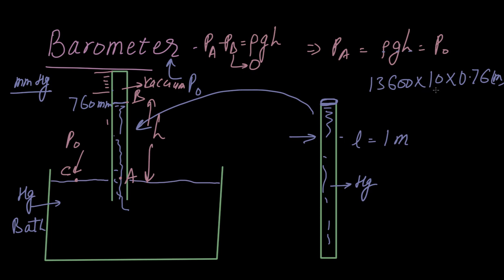So 760 mmHg will be approximately equal to 0.76 meters. This is in meters, this is in meter per second squared, and this is in kg per meter cube. If we do all of this, we'll get approximately 10 raised to the power 5 Pascal. This is a very ingenious way to find out atmospheric pressure.